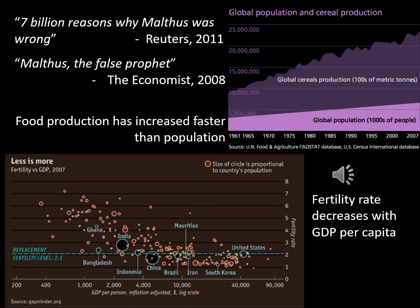More recently, however, Malthus seems to have fallen from grace in mainstream economics. For example, The Economist published "Malthus Defaults Profit," and Reuters ran an article entitled "7 Billion Reasons Why Malthus Was Wrong." These critics of Malthus point out that the assumption of linear growth in food production is flawed, and the assumption that the population increases exponentially does not hold as countries get richer. Indeed, countries with high incomes have lower birth rates, and during the last two decades, food production has grown faster than the population, although often not without adverse effects — for example, claiming more land for agriculture and increased use of fertilizer and pesticides, all contributing to the loss of biodiversity.